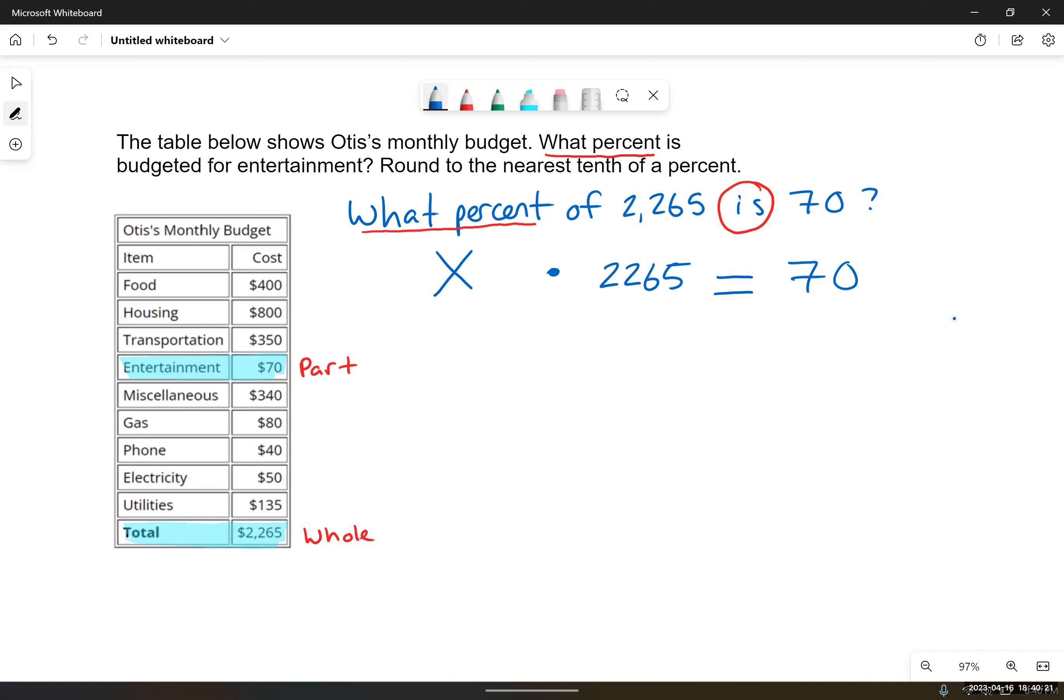We could write this in a bit more compact form: 2,265X equals 70. We want to get X by itself, we want to isolate X. Right now, X is being multiplied by a number, so we do the opposite. We divide by that number. So we'll divide both sides by 2,265. Whatever we do to one side, we have to do to the other.